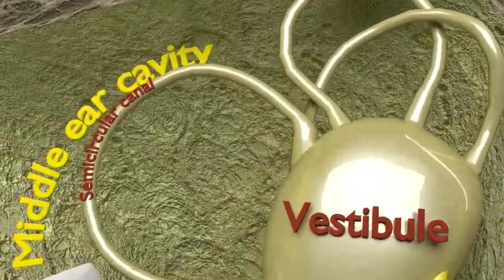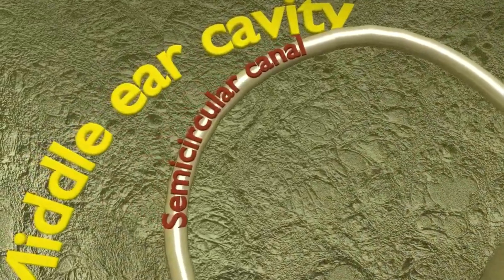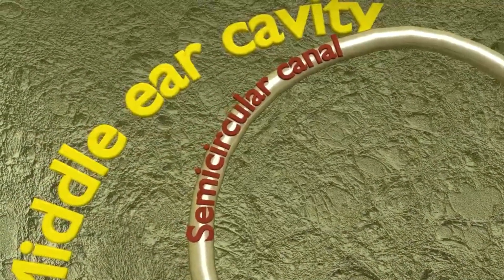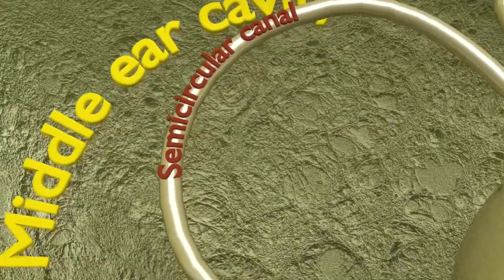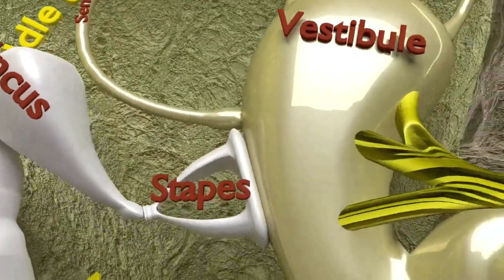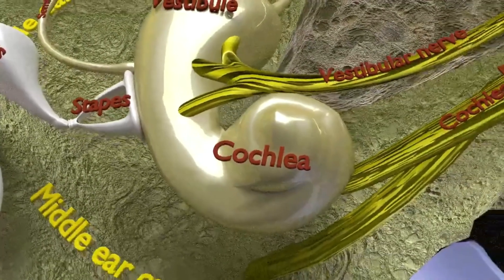The vestibule connects to the bony three semicircular canals—anterior, posterior, and lateral—which are angled at right angles to each other, and the cochlea, a structure that has a spiral shape similar to a snail shell.